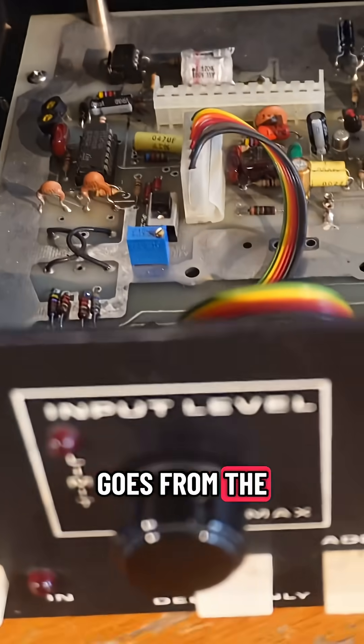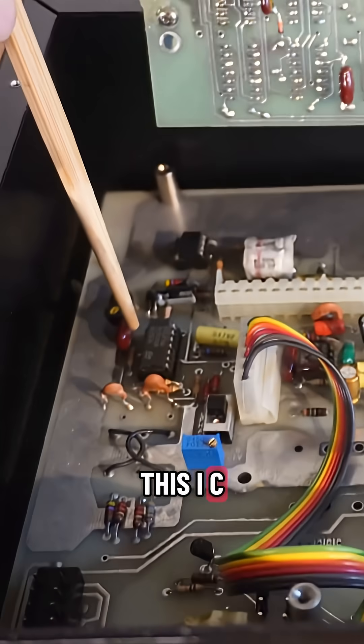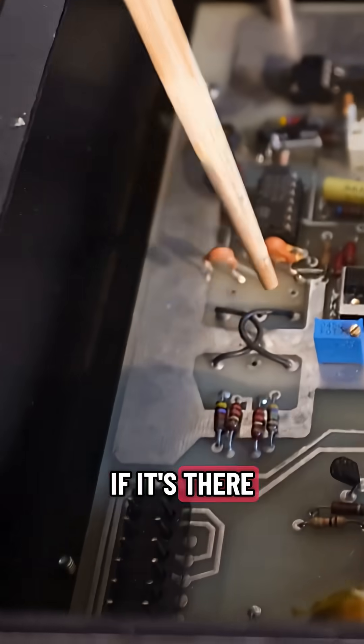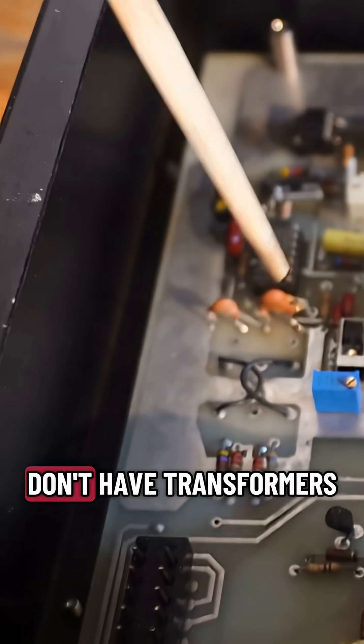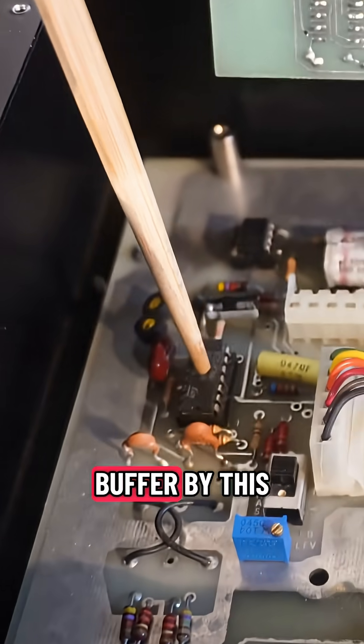So, we have our signal that goes from the terminal strip through this IC, or, well, first the transformer if it's there. This one, it isn't. Most of them don't have transformers. It is buffered by this IC,